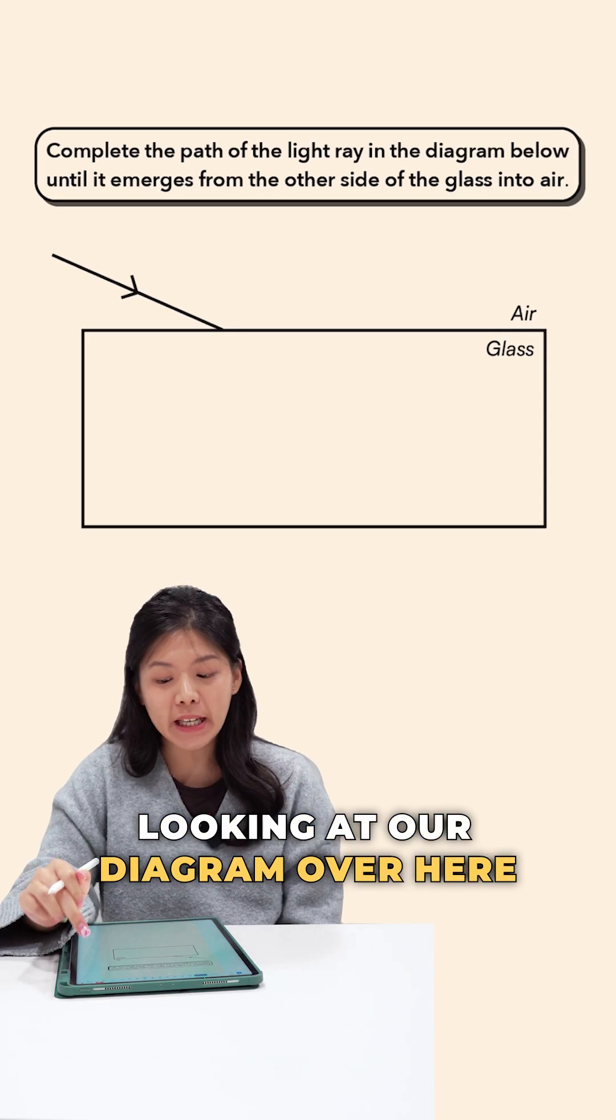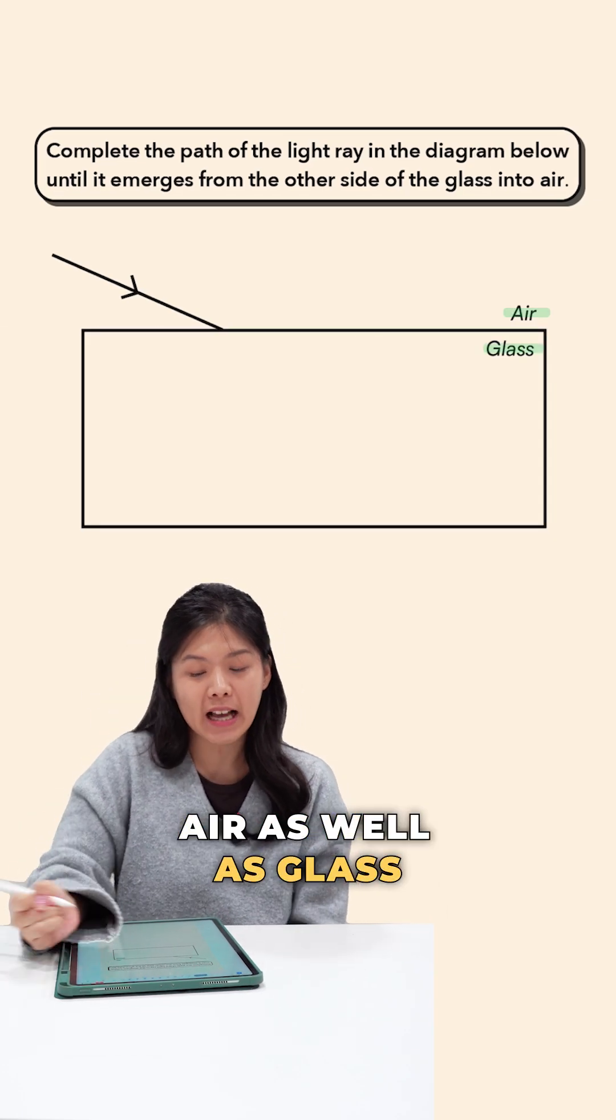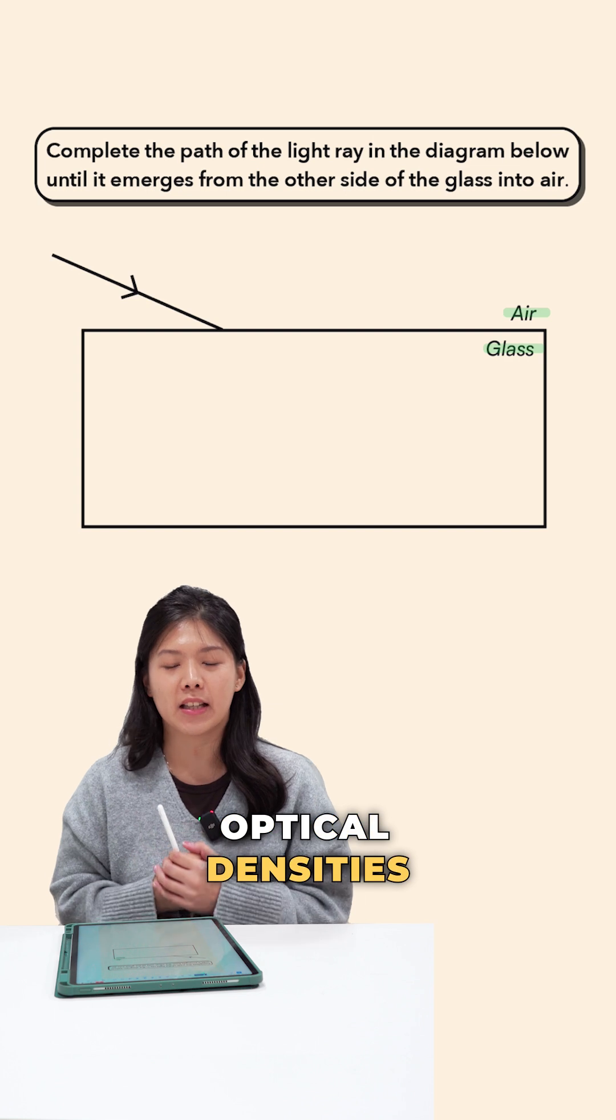Looking at our diagram over here, we have two different media, air as well as glass, which are both of different optical densities.